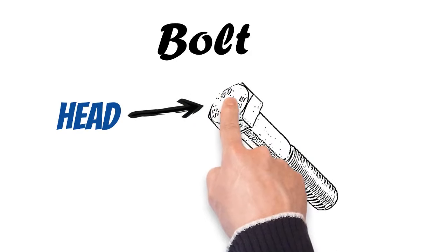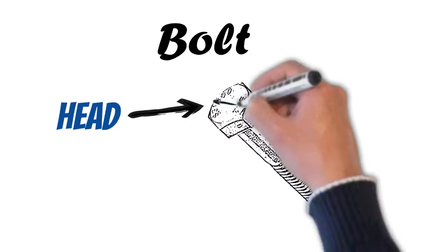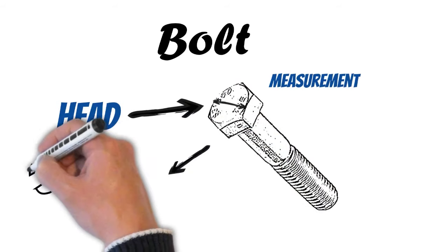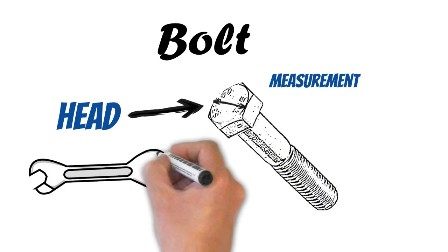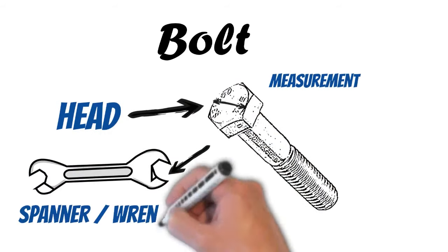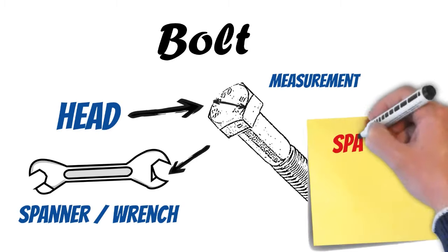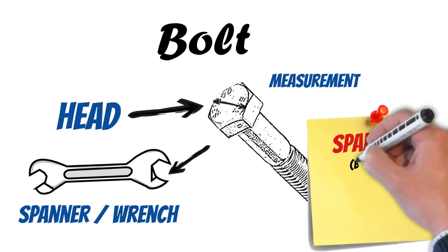This is the head of the bolt, and if we take this measurement across the head of the bolt, this will give us the size of the spanner or wrench that we need to use. So if this measurement across the head is 12mm, we need a 12mm spanner or wrench.